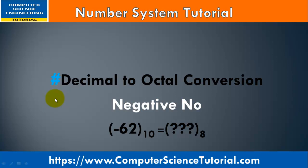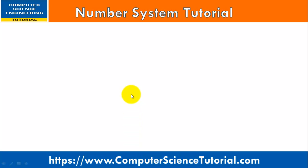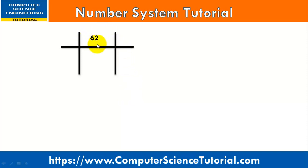Now I will explain how to convert a negative number into octal. In this example my number is minus 62. When you convert any negative number into octal, we just use the number without its sign. So our number is minus 62, but I write 62 and divide it by 8: 8 times 7 is 56, so the remainder is 6.